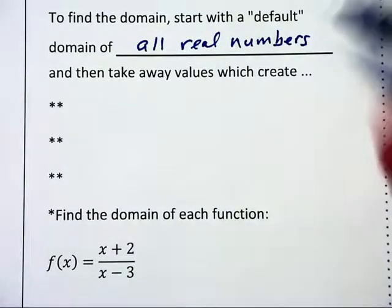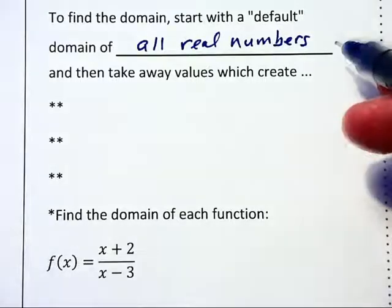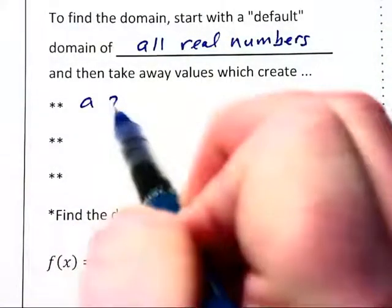So to find the domain, we start with this default domain of all real numbers, and then take away values which create a zero in the denominator.